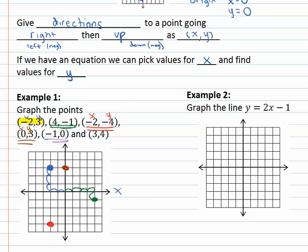Negative one, zero means we move negative one on the x, zero on the y. There's no vertical change.